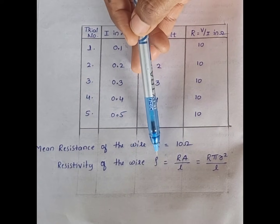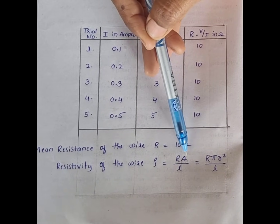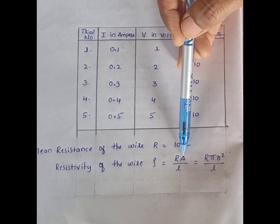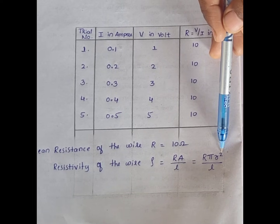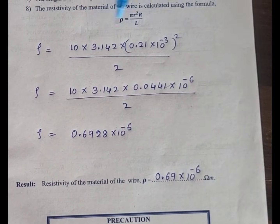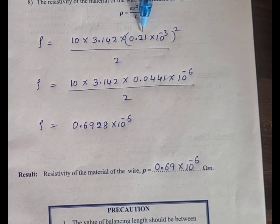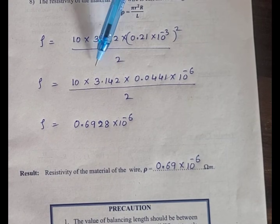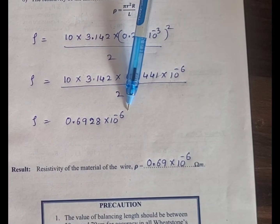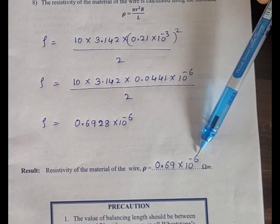Resistivity of the wire is denoted by rho. We know the formula: rho equal to R into A divided by L. Here R represents resistance, A represents cross-sectional area of the given wire, and L is the length. In place of A we write pi r square, where small r is the radius. Substituting all values: resistance is 10, pi value is 3.142, and radius is 0.21 into 10 raise to minus 3 meters. After squaring and calculating, rho equal to 0.6928 into 10 raise to minus 6 ohm meter, approximately 0.69 into 10 raise to minus 6 ohm meter.